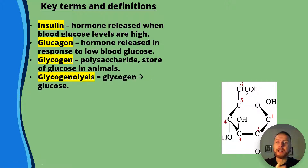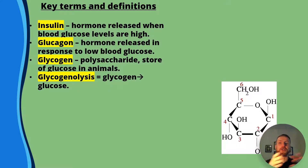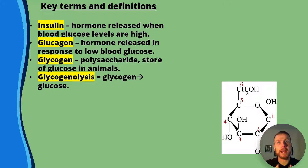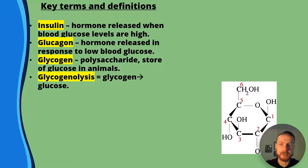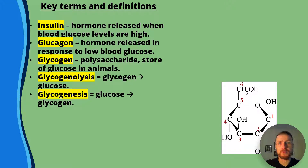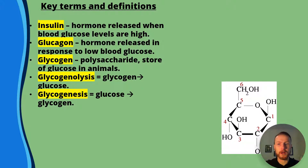Glycogenolysis — lysis means to split, so we're splitting glycogen to glucose. I'm going to show you a diagram that will make that really clear a bit later. Glycogenesis is glucose to glycogen — we're forming a polysaccharide from glucose.